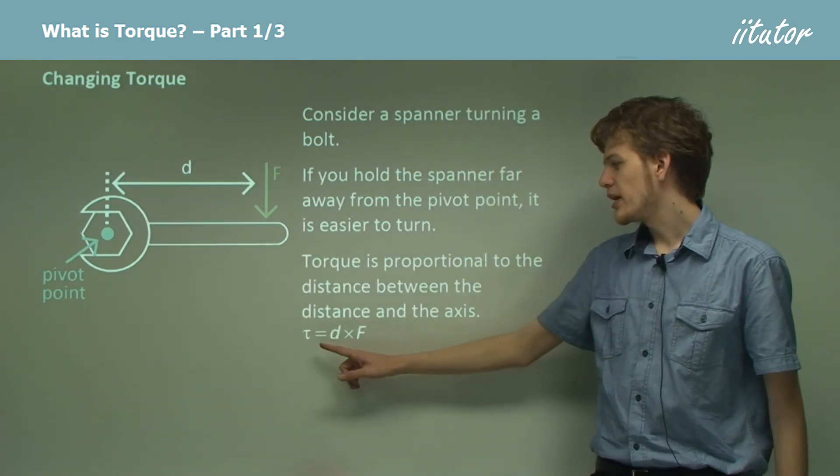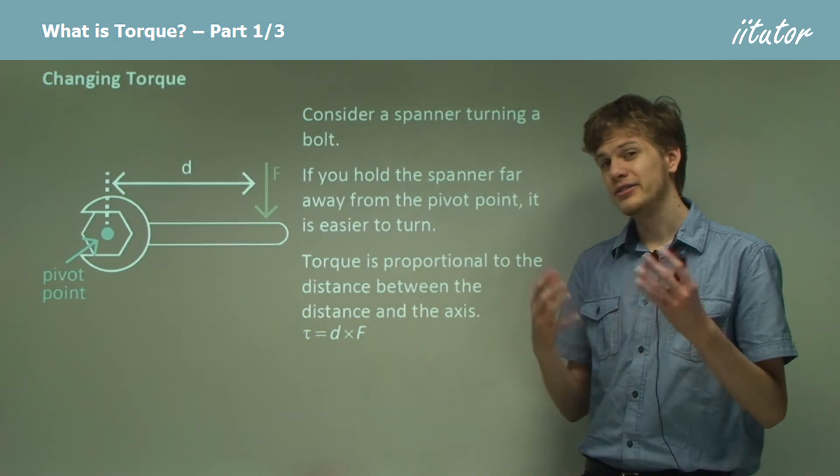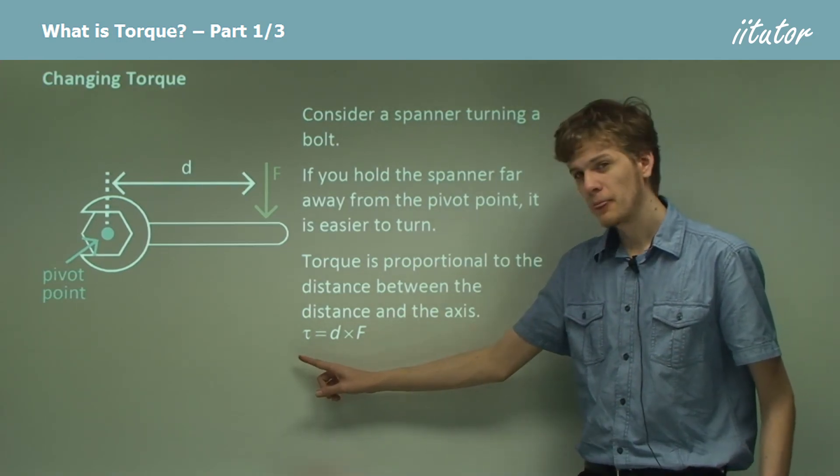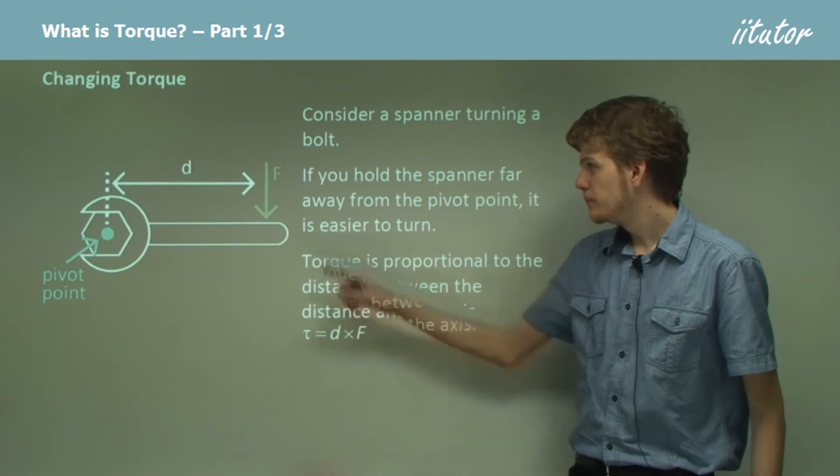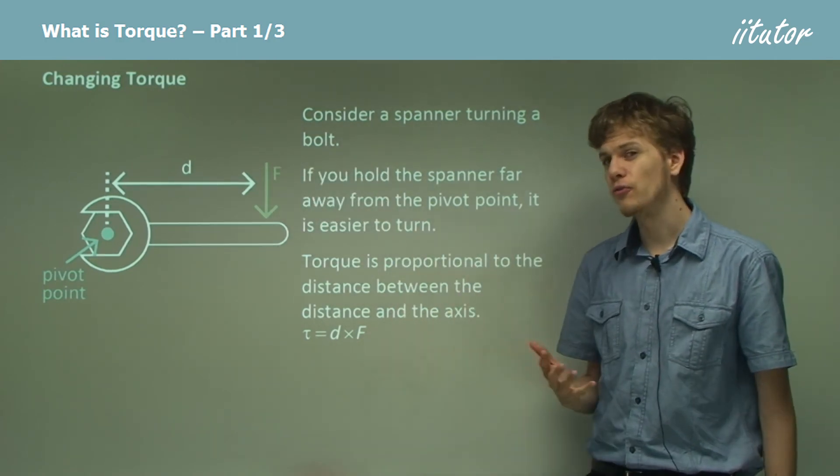So we can say torque, represented by tau, a Greek letter, equals D times F, where F is the magnitude of the force.